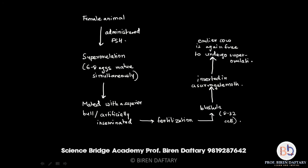This process continues: one cow is always used for super ovulation while the other is used as a surrogate mother. A surrogate mother is used for the growth of the developing embryo and to give birth to the fetus. This entire technology is called Multiple Ovulation Embryo Transfer.